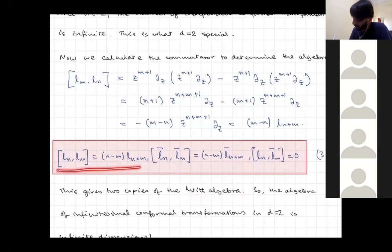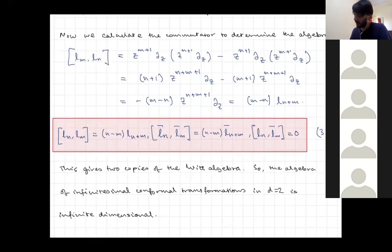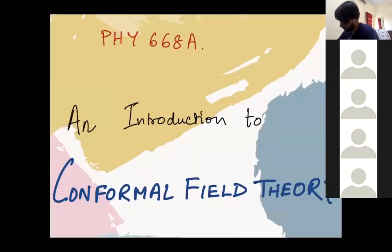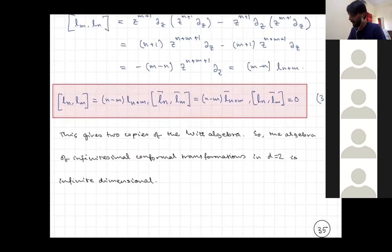We have two commuting copies of the Witt algebra — one for the L_n's and one for the L-bar_n's, with L and L-bar equal to zero because Z and Z-bar are independent coordinates. So we have ended up with the Witt algebra. This is an infinite dimensional algebra for two-dimensional CFTs.